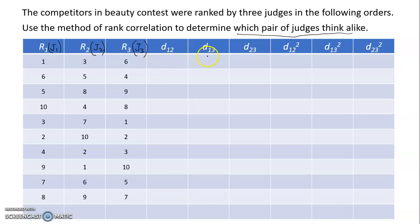As per the Spearman formula, we need the differences of ranks between judges. We'll calculate d12 (difference between judge 1 and judge 2), d13 (judge 1 and judge 3), and d23 (judge 2 and judge 3), then square them. Whether you compute R1 minus R2 or R2 minus R1 is pointless since we square the differences anyway.